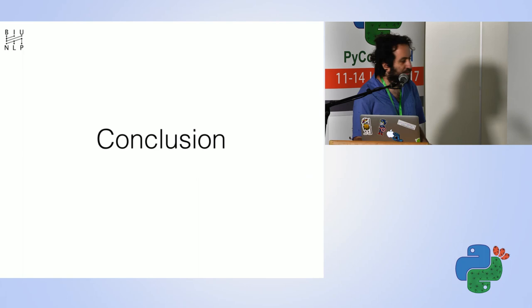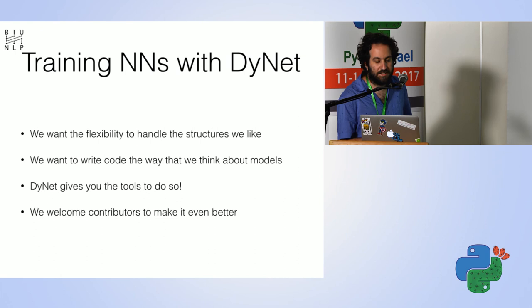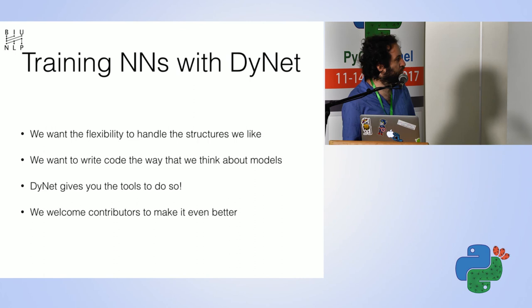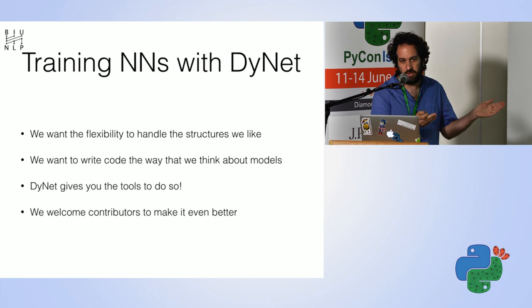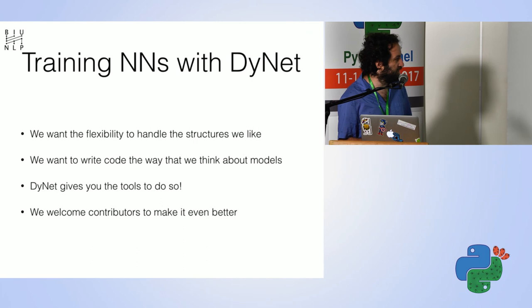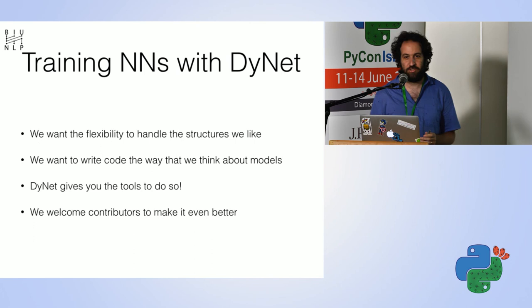To conclude: we want the flexibility to handle complex network structures, to code in the way we think about models — writing imperative code that creates what we want to do, then just running forward and backward. DyNet provides tools for all of this, and we welcome your contributions to make it even better. Thank you.